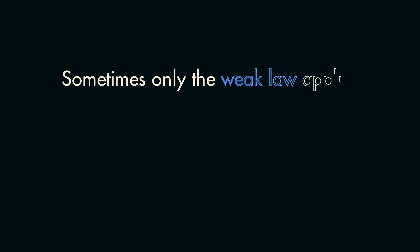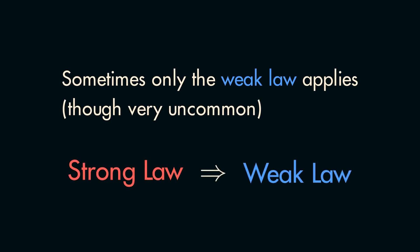Ultimately, the main reason there are two versions of the law of large numbers in the first place, is that there are just a few cases where only the weak law applies. But do note that if the strong law applies, then that implies that the weak law does as well.